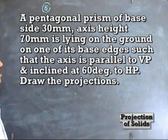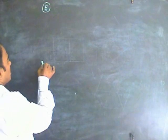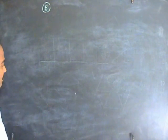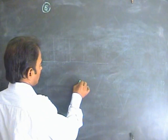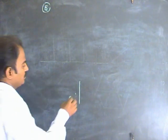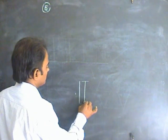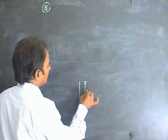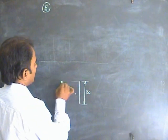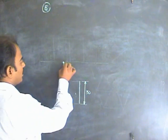We have to draw the projections. First, draw the top view in the side position. Draw the XY line, then draw the pentagon in the side view position. Draw the vertical line for the base side — the base side is given as 30 mm. The side should be kept perpendicular to the XY line.